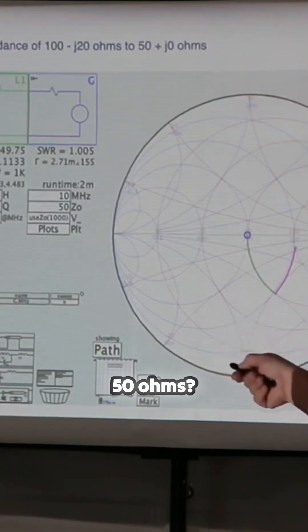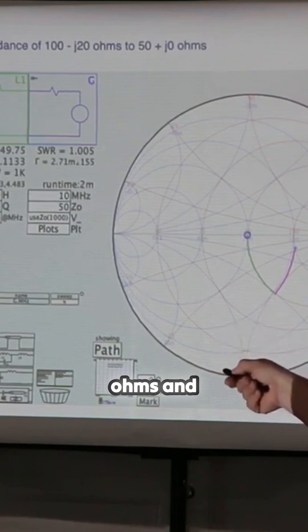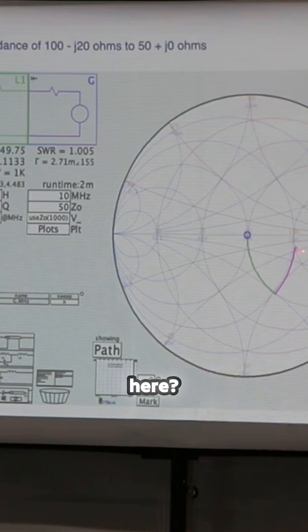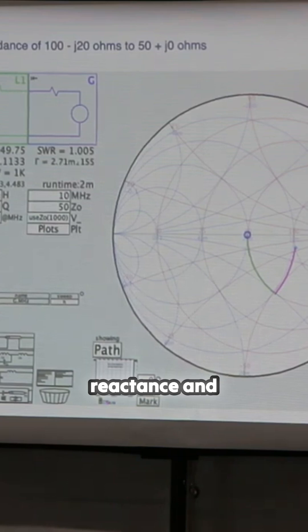What if my antenna is not 50 ohms? What if it's 100 ohms and negative 20 ohms capacitive, which puts us out here. And I want to build a tuner that's going to allow me to resolve or eliminate that reactance and transform the impedance.